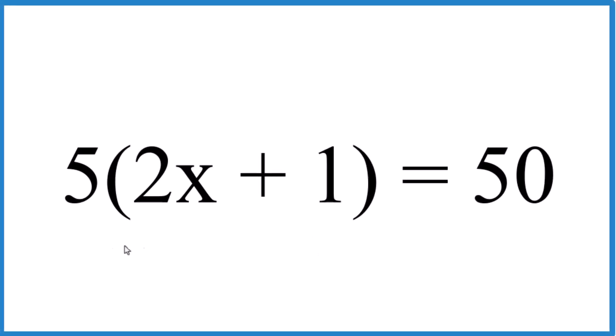I was asked to solve this equation here. 5 times the quantity 2x plus 1 equals 50. So I'll show you how we might do that.